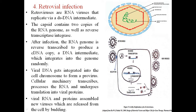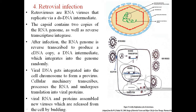Retroviral infection uses retroviruses, which are RNA viruses that replicate via a double-stranded DNA intermediate. The capsid of retroviruses contains two copies of the RNA genome, as well as reverse transcriptase and integrase enzymes. After infection, the RNA genome is reverse transcribed by reverse transcriptase, and the resulting viral DNA gets integrated randomly into the cell chromosome, forming a provirus. The cellular machinery then transcribes and processes the RNA, viral proteins are formed by translation, and new viruses are released from the cell by budding.